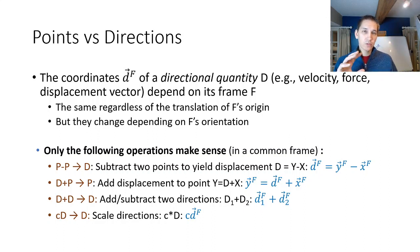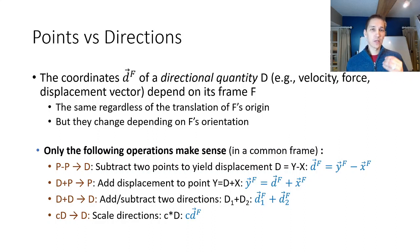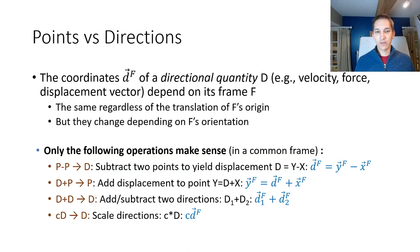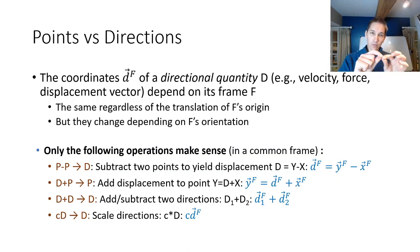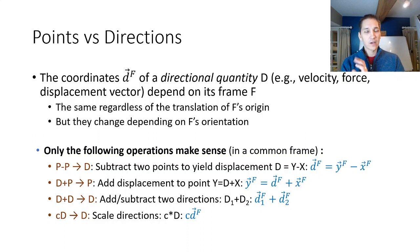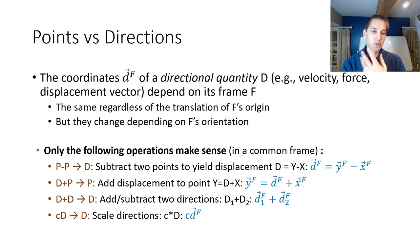We can also do certain operations to convert points to directional quantities. For example, when we want the displacement between the spatula and the pancake, we subtract those two points — but we can only subtract them when they're in the same reference frame. We can yield a displacement by subtracting the coordinates of two points in the same reference frame. We can also add a displacement back to a point, add two displacements together, or scale displacements and directions. All those quantities have to be in the same reference frame.